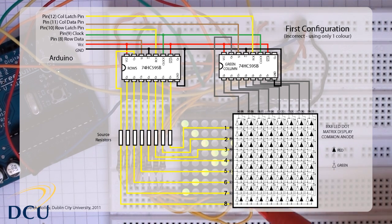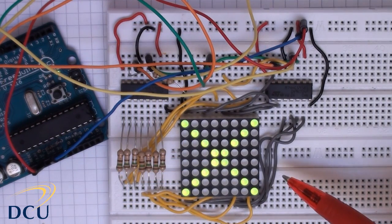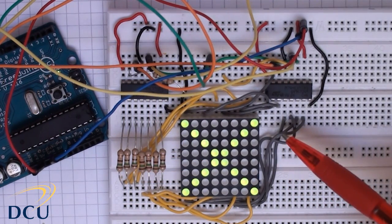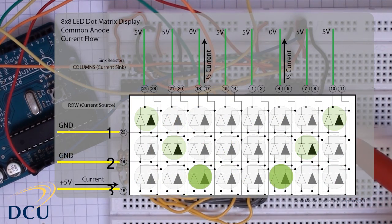In this particular configuration, the rows are driven through the yellow wires here, and the columns come out through the grey wires, and these are connected to the right 74HC595.